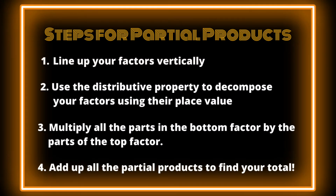Let me name the steps we just did — you may want to pause and write these in your notes. Step one: line up your factors vertically, which helps transition into other ways of multiplication. Step two: use the distributive property to decompose your factors using their place value — the 3 in the tens place gives 30, the 8 in the ones place gives 8. Step three: multiply all the parts of the bottom factor by all the parts of the top factor. Step four: add all your partial products back together to find the total product.